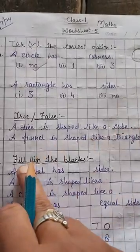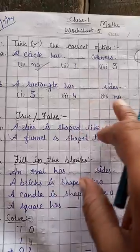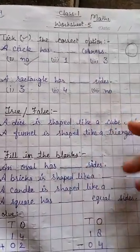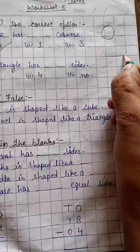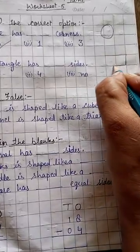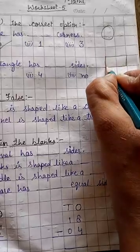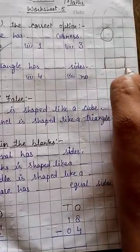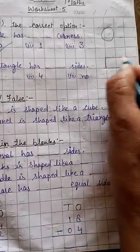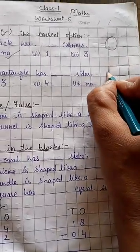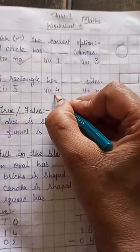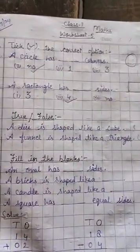Now next one is, a rectangle has dash sides. Which one is the rectangle? This, this, this, this. This is the rectangle. How many sides are there? One, two, three, four. Then how many sides? Four.